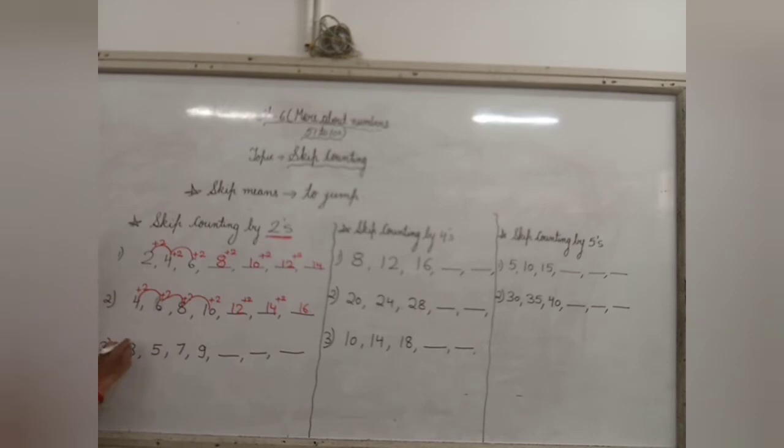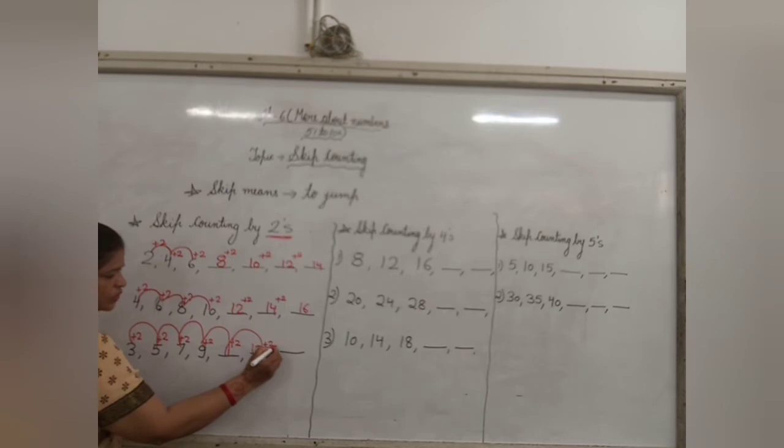Now 3. From 3, you have to jump to 5. Means again you have to add 2. So 3 plus 2 will be 5. 5 plus 2 will be 7. 7 plus 2 will be 9. Now children, 9 plus 2, 11. 11 plus 2, 13. 13 plus 2, 15. Clear?